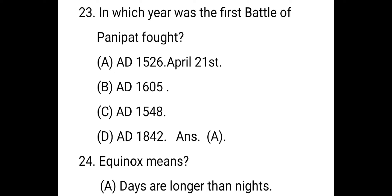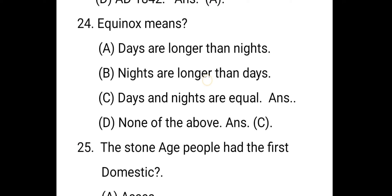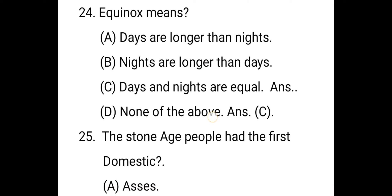The next question: equinox means that day and night are equal. The right answer is C. The equinox is the time or date, occurring twice each year, at which the sun crosses the celestial equator and day and night are approximately equal in length — around 22nd September and 20th March of every year.